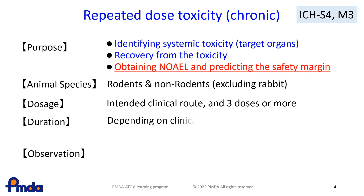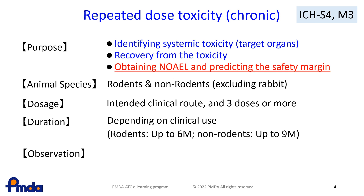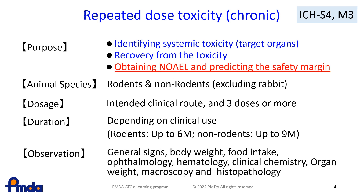The treatment period varies depending on the treatment period in humans in the clinical trial. The treatment period is six months in rodents and nine months in non-rodents at the longest. Endpoints generally include general signs, body weight, food intake, ophthalmology, hematology, clinical chemistry, organ weight, macroscopy, and histopathology.